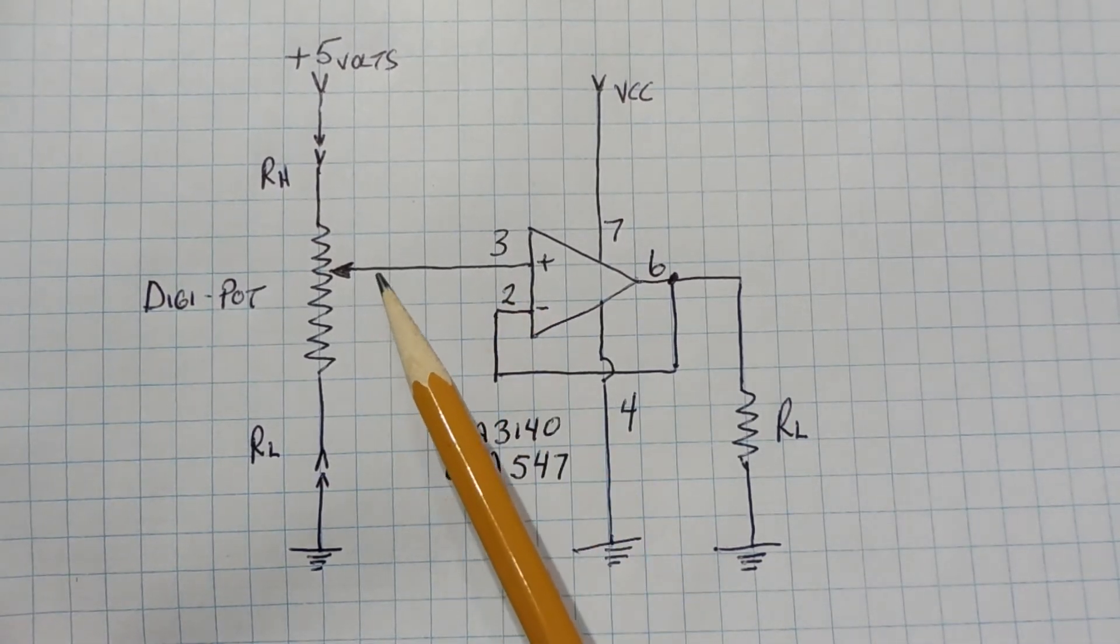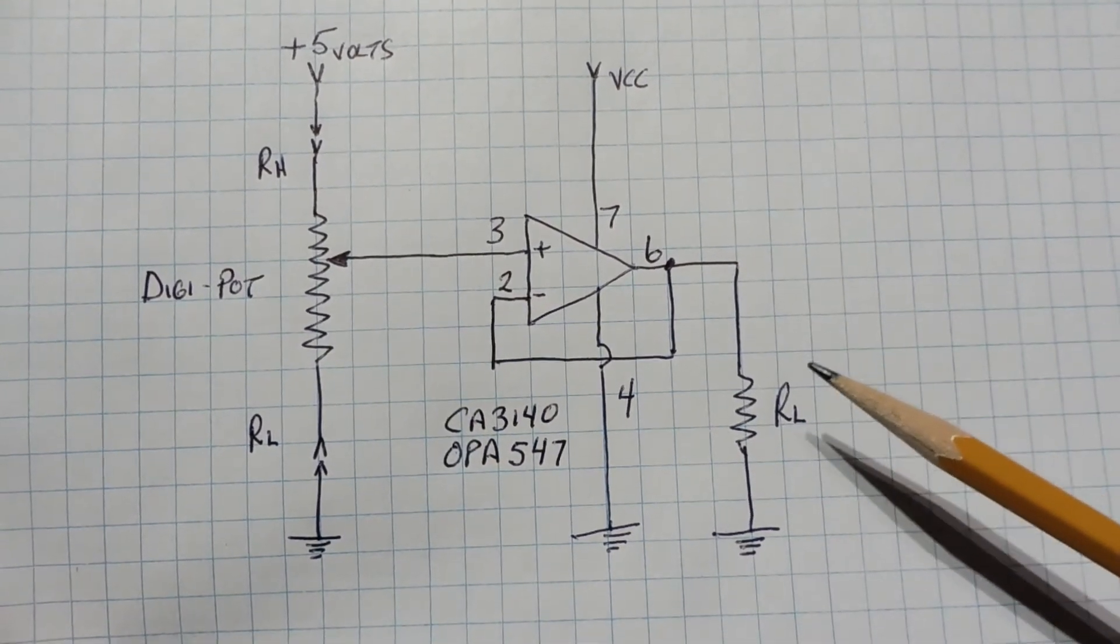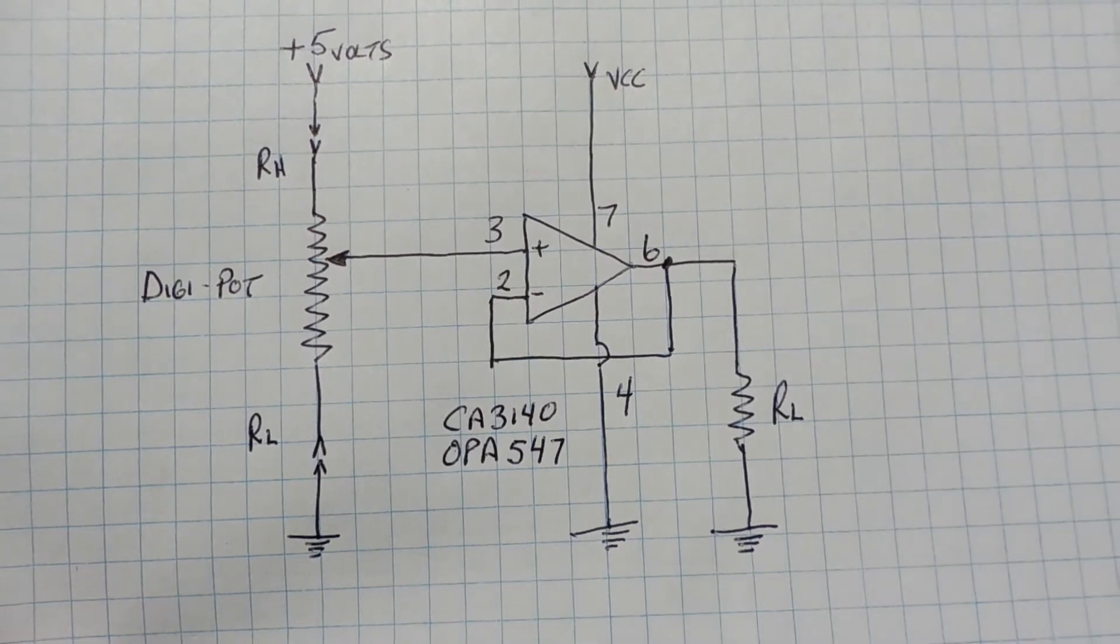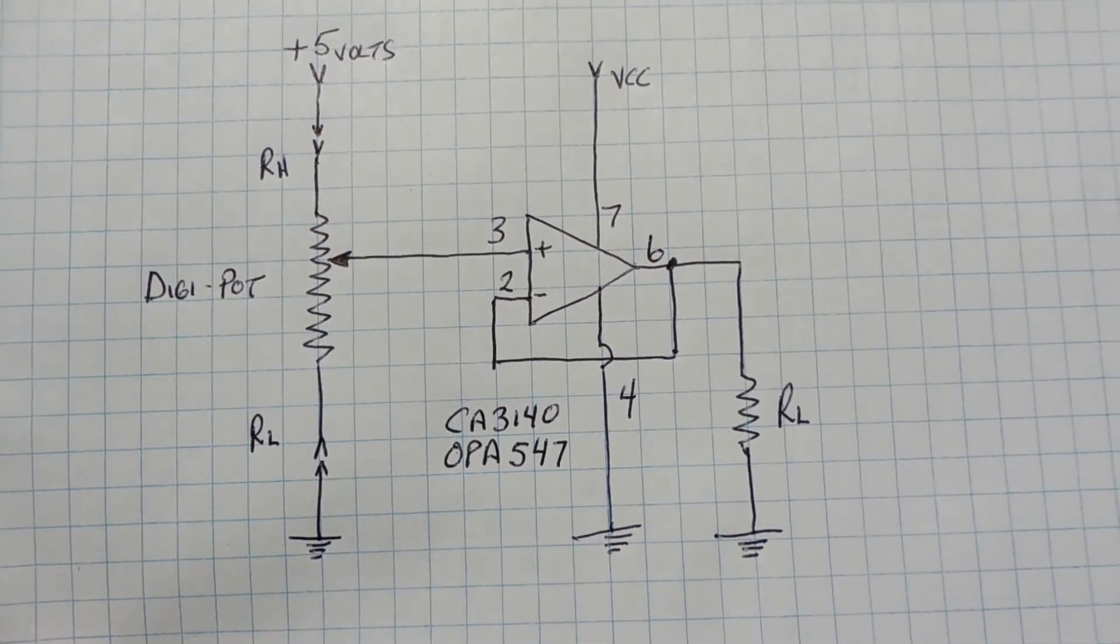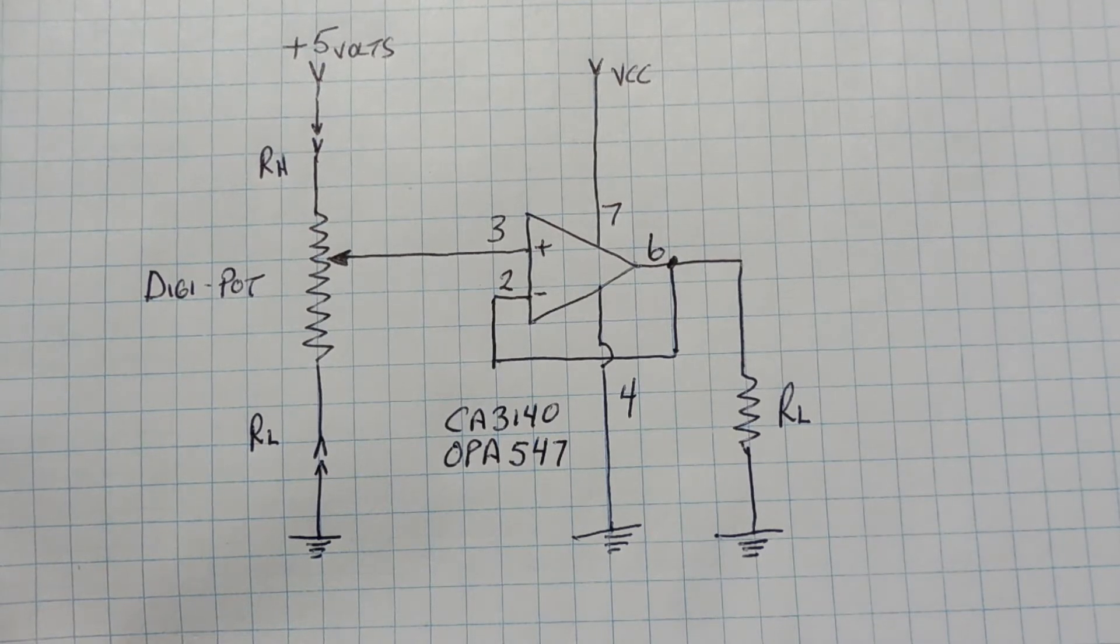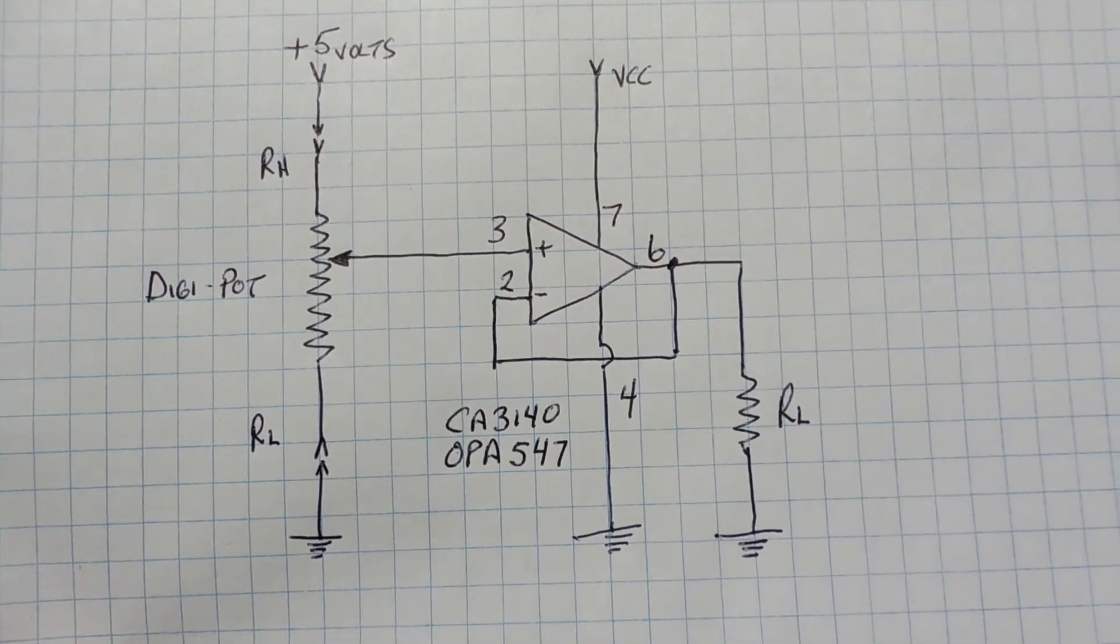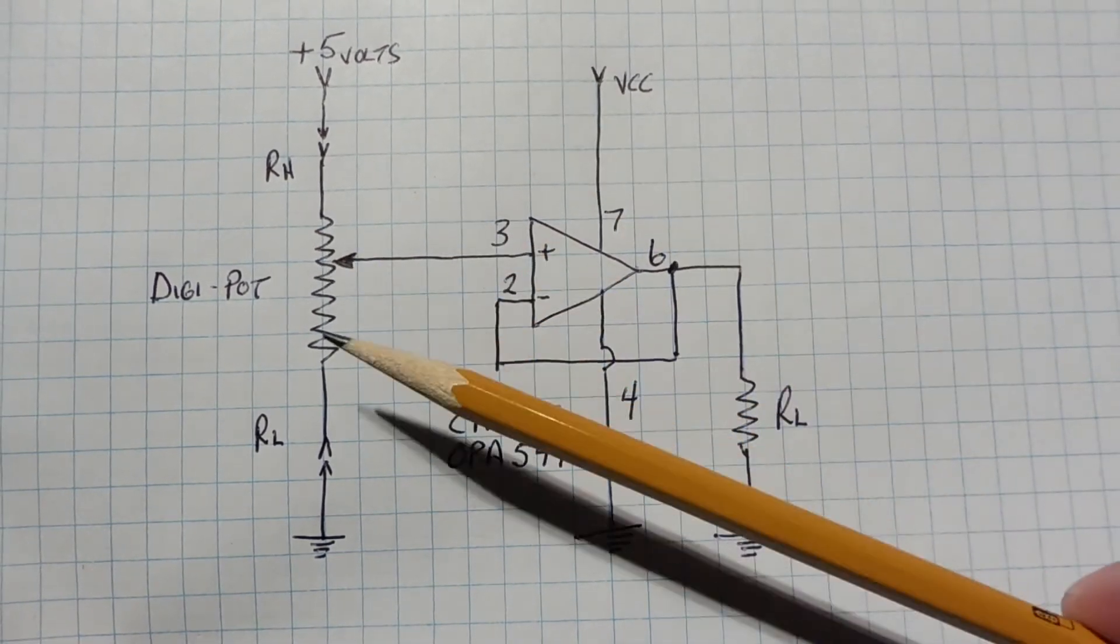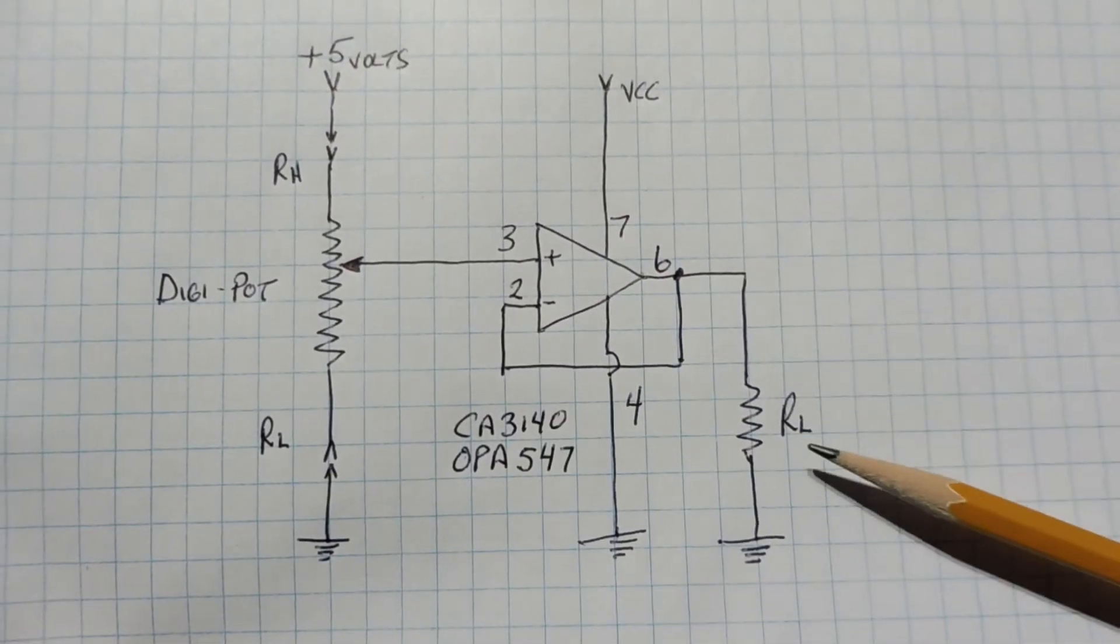So the wiper current will be very small. Now the output of the op amp pin 6 is feeding my load RL. Now the output current of this op amp, the CA3140, is only about 10 milliamps. So if you need more current, you could use a high current power op amp like an OPA547, and you could get 300 to 500 milliamps. Now this op amp is configured as a unity gain non-inverting amp. So as we vary our DigiPot from 0 to 5 volts output, we'll get 0 to 5 volts across our load RL.